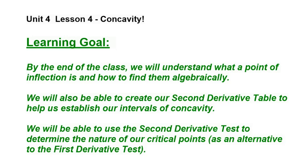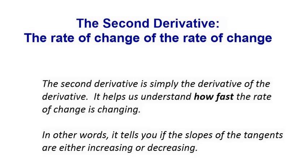We covered critical points in a previous video, but I mentioned that as an alternative to using the first derivative, you can actually use the second derivative to determine the nature of critical points. The second derivative is just the rate of change of the rate of change. We used that when looking at acceleration earlier on, and all you have to do is take the derivative of the first derivative — that's what your second derivative is.